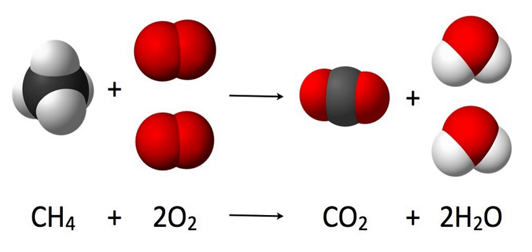The law of conservation of mass dictates that the quantity of each element does not change in a chemical reaction. Thus, each side of the chemical equation must represent the same quantity of any particular element. Likewise, the charge is conserved in a chemical reaction. Therefore, the same charge must be present on both sides of the balanced equation.